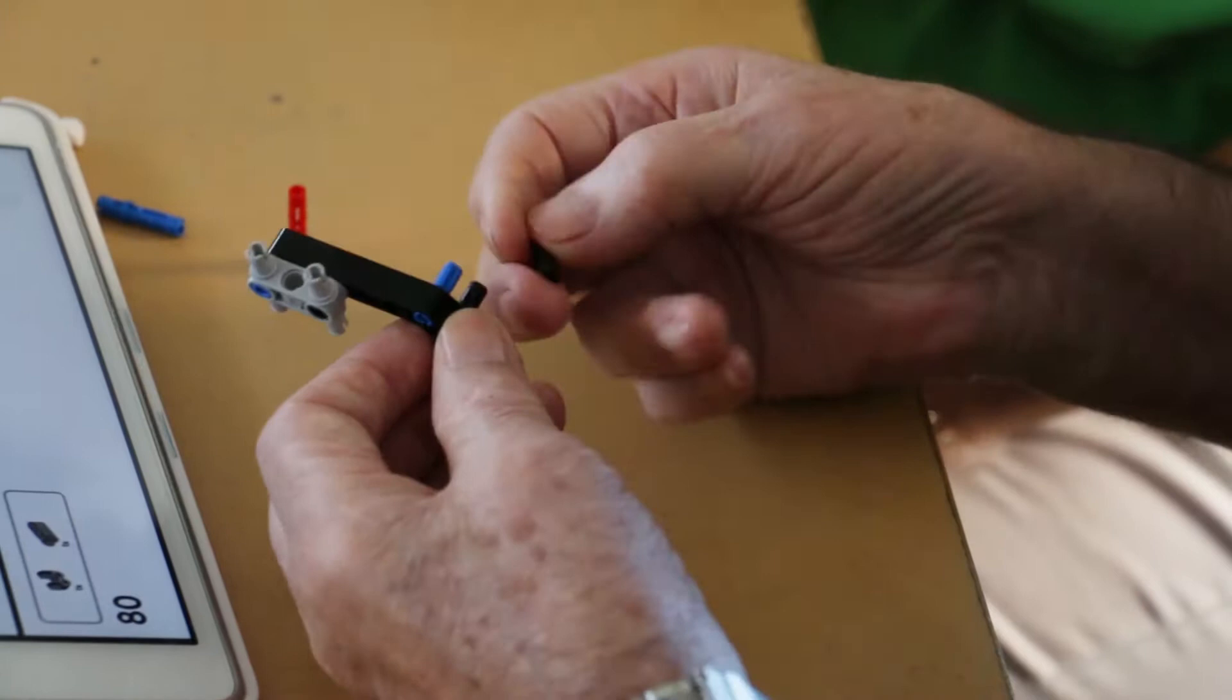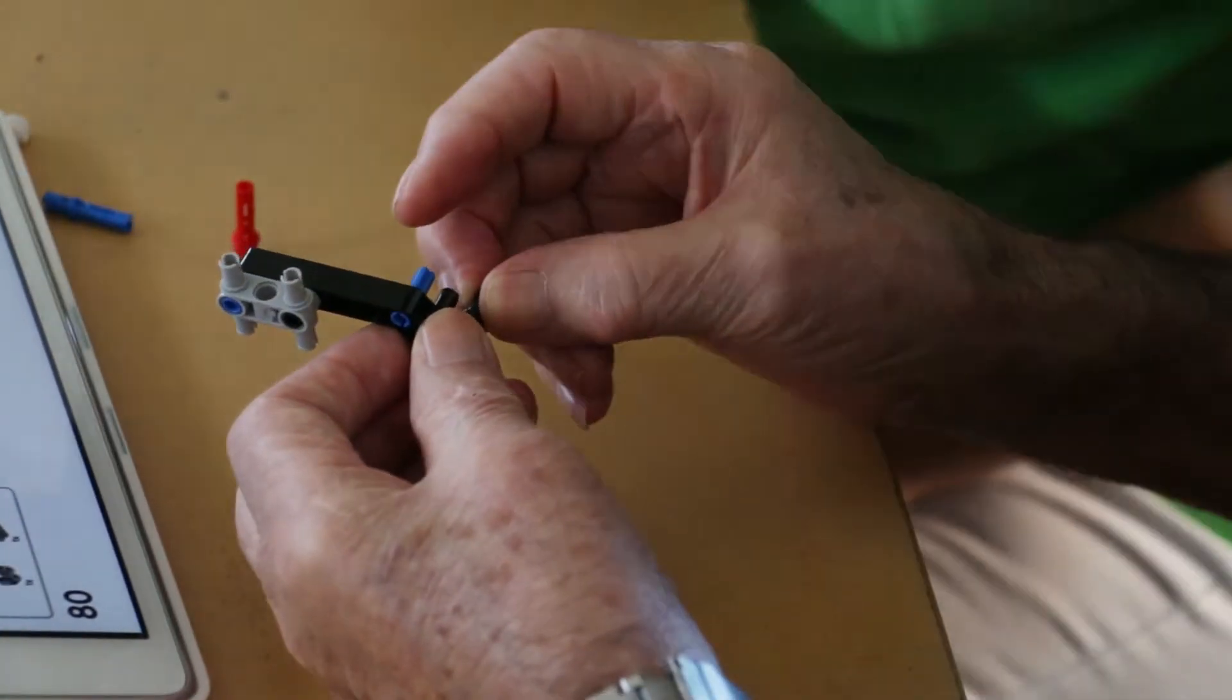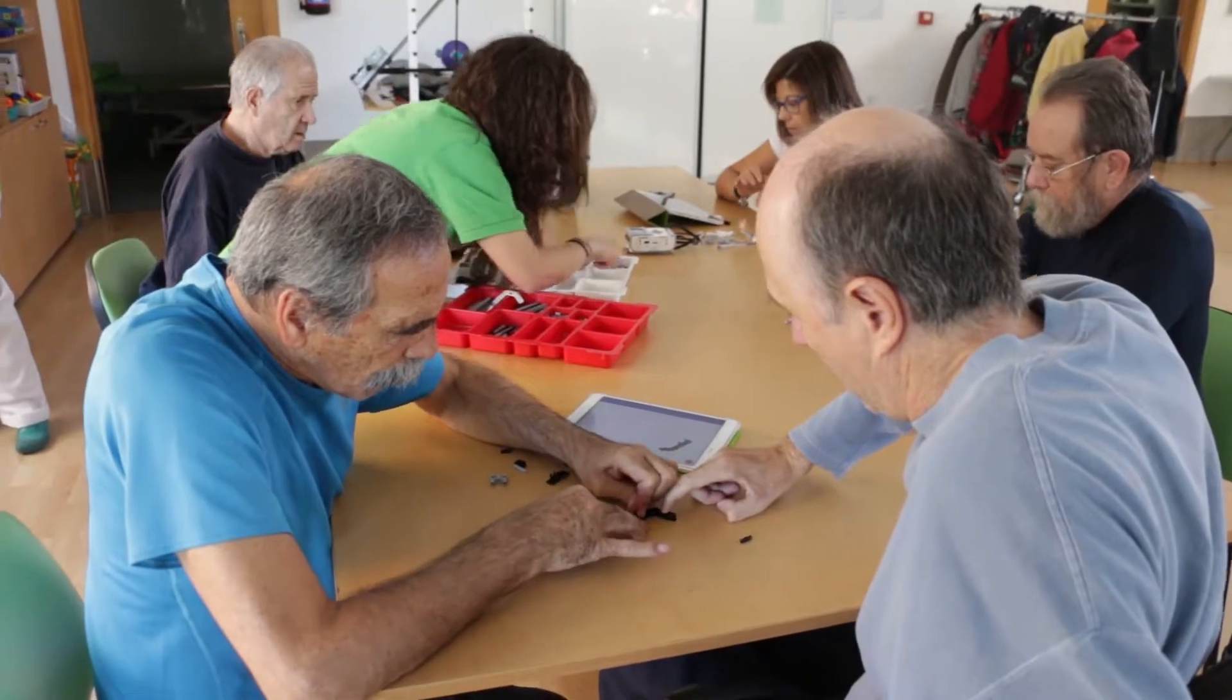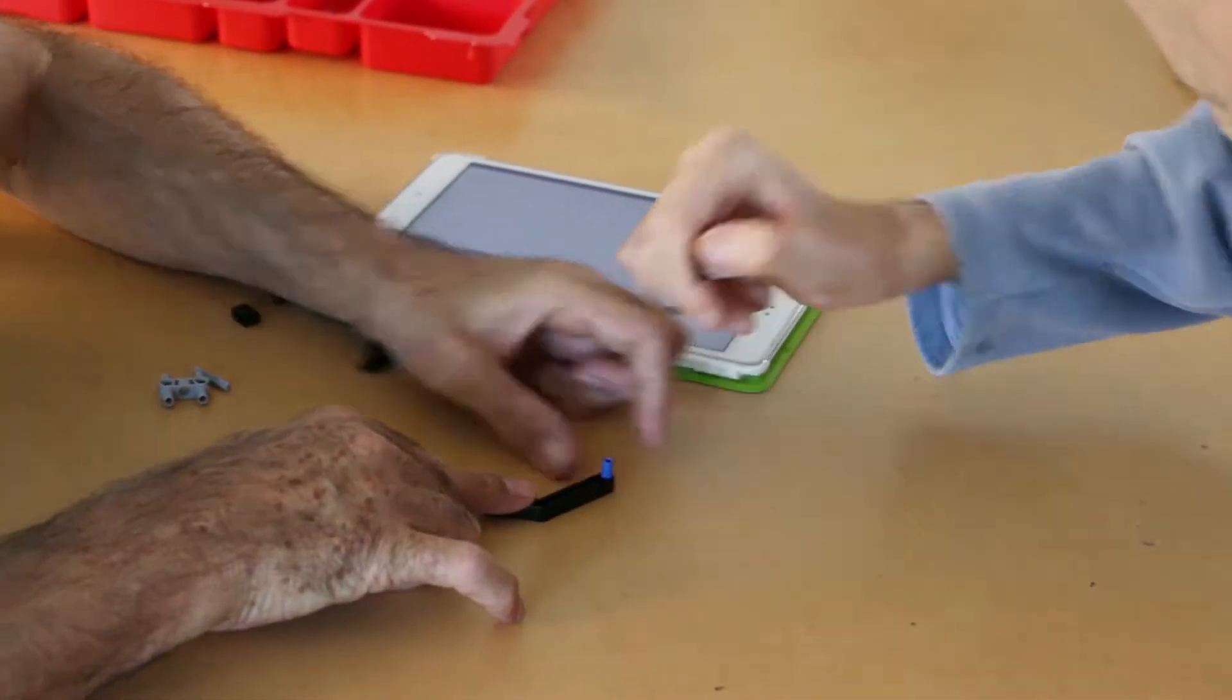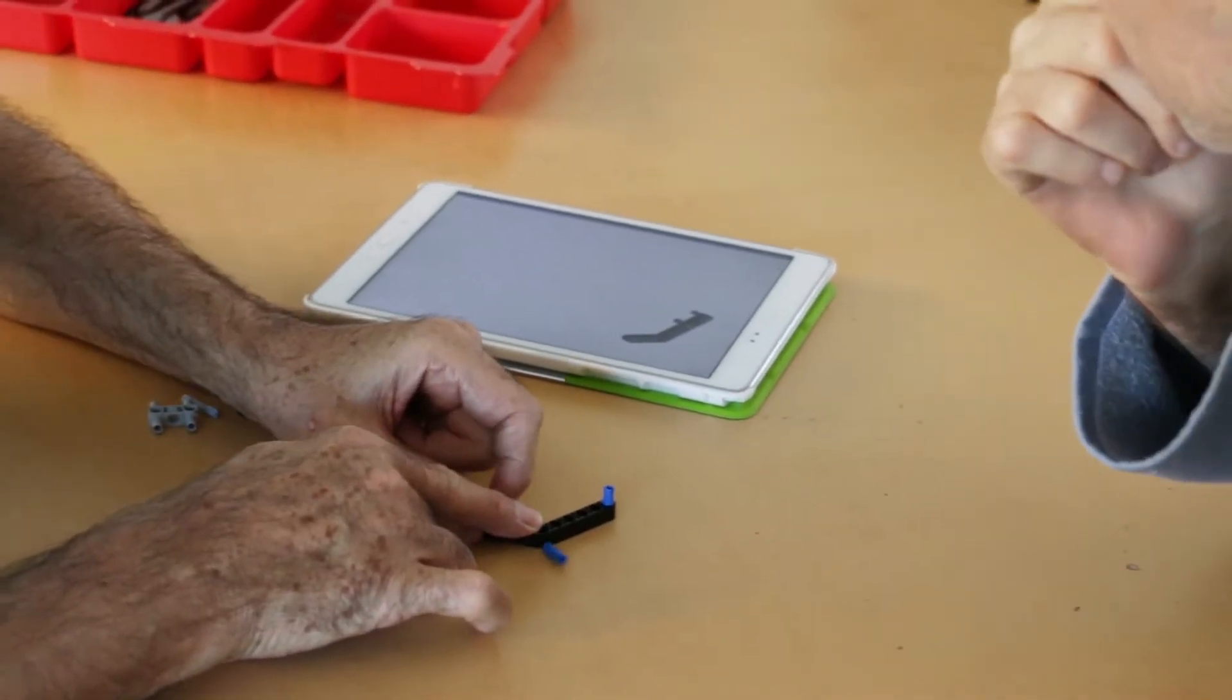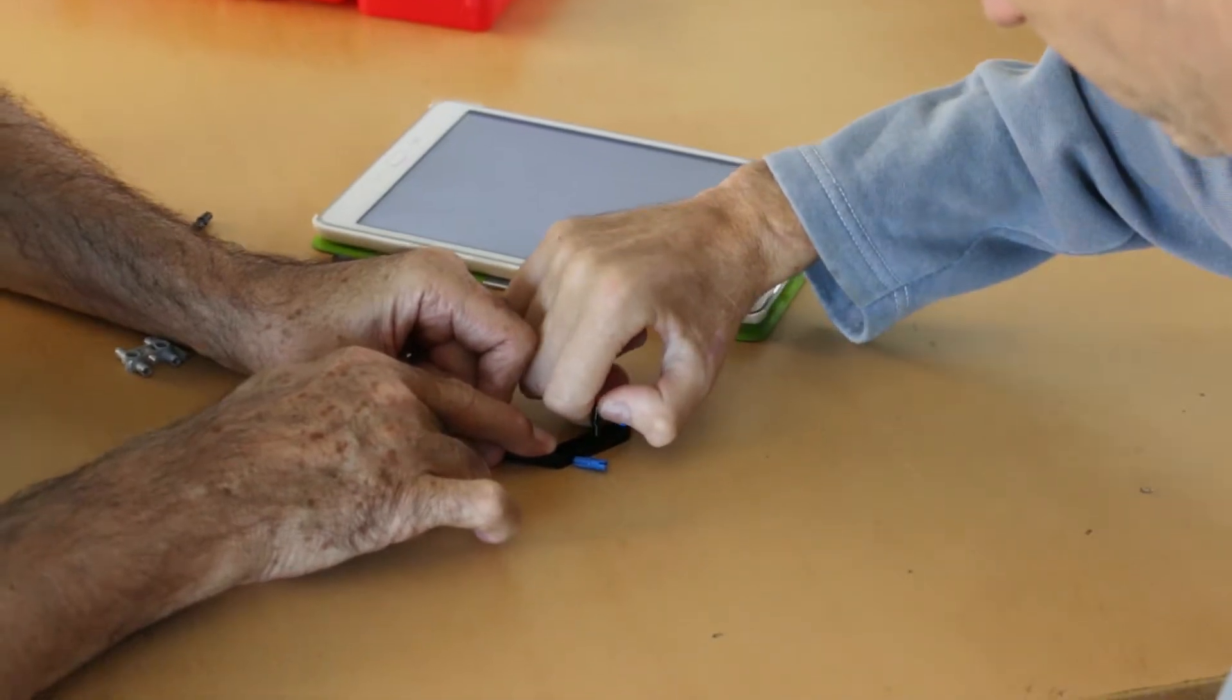Este robot lo estamos realizando entre diferentes usuarios, cada uno va haciendo una parte que luego se van a ir uniendo. Van cogiendo las piezas que son bastante pequeñas y van trabajando de esta forma la habilidad de la destreza.